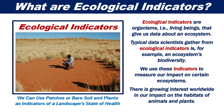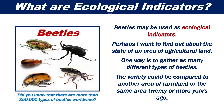There is growing interest worldwide in our impact on the habitats of animals and plants. Beetles may be used as ecological indicators. Perhaps I want to find out about the state of an area of agricultural land. One way is to gather as many different types of beetles as possible. The variety could be compared to another area of farmland, or the same area 20 or more years ago.